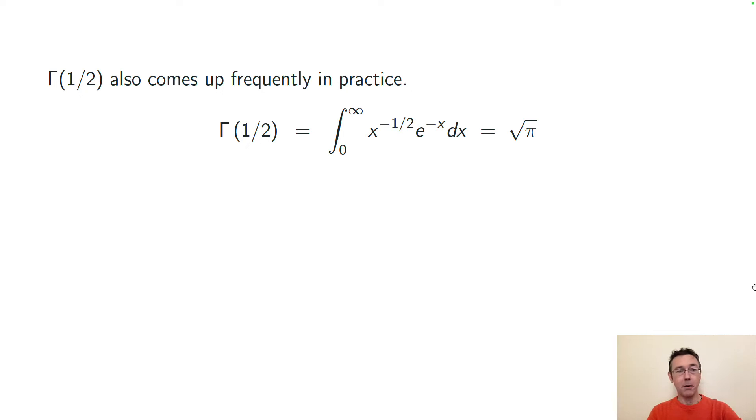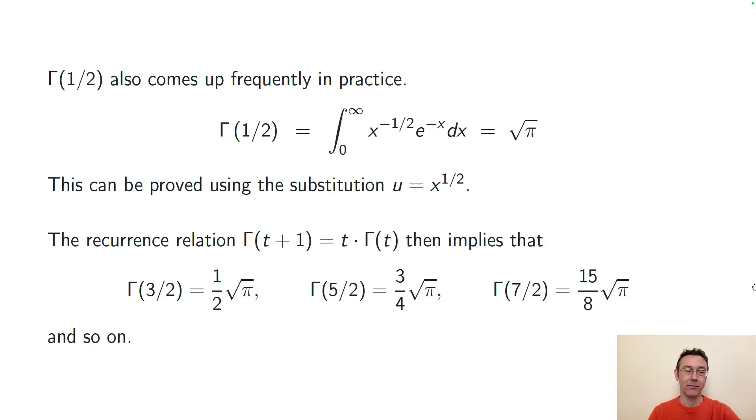One more example would be gamma of 1 half, and that comes up a bunch in practice, for instance with the chi-square distribution. This is the integral from 0 to infinity x to the negative 1 half e to the negative x dx. This ends up being the square root of pi. And you can prove that using the substitution u equals x to the 1 half. And then you can use this recurrence relation gamma of t plus 1 equals t times gamma of t to get a number of other values like gamma of 3 halves.